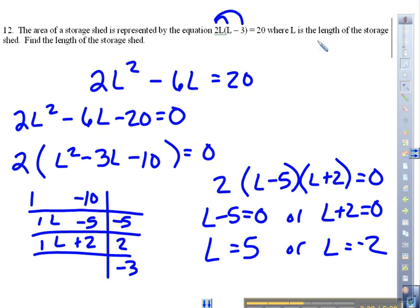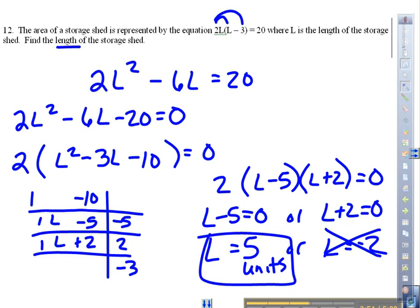And what were we solving for in the first place? The length. Which one do you reject? The negative. You can't have negative length. It doesn't look like they gave me any units, so we're just going to say our length is 5 units. Is that in your answer bank? Yes. Super.